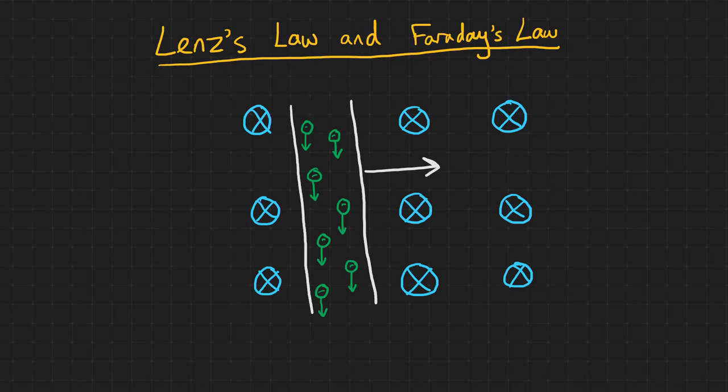How does this apparently magical generation of electricity conserve energy? Well, the induced current in this wire will set up a second Fleming's left-hand rule situation. This time, our second finger points in the direction of the conventional current flow in our wire. In our case here, up the screen, in the opposite direction to the movement of the electrons.